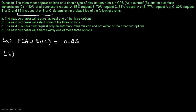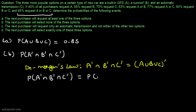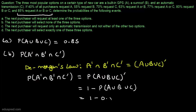In part B we have to find the probability that the next purchaser will select none of the three options — that is, P(Aᶜ ∩ Bᶜ ∩ Cᶜ). We can use De Morgan's law: Aᶜ ∩ Bᶜ ∩ Cᶜ = (A ∪ B ∪ C)ᶜ. So the probability equals 1 minus P(A ∪ B ∪ C) = 1 − 0.85 = 0.15.